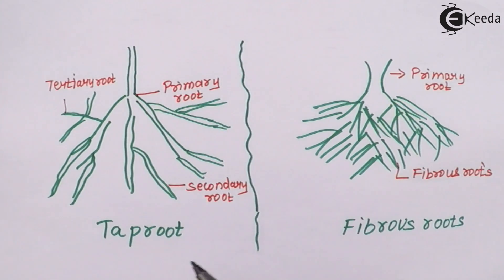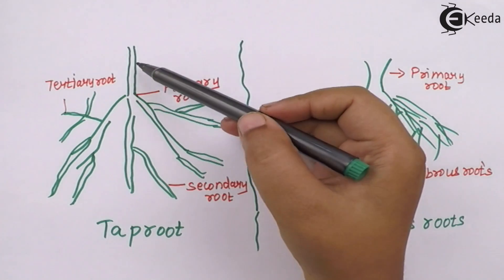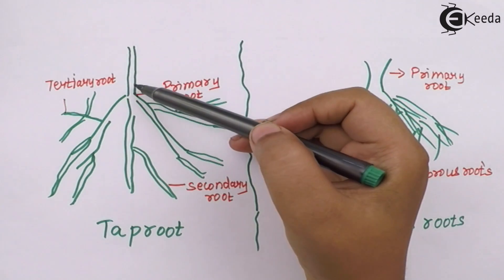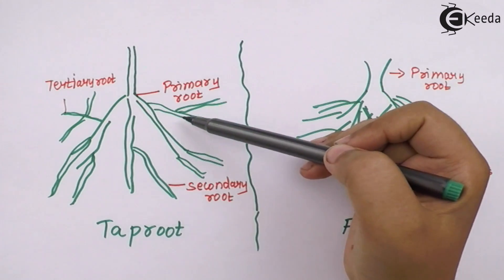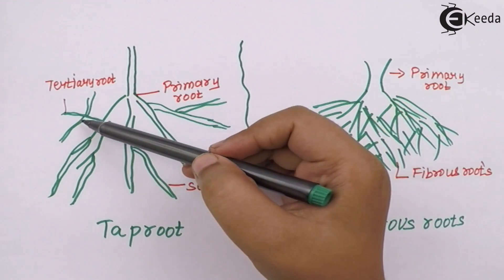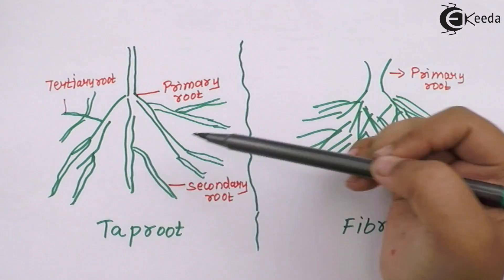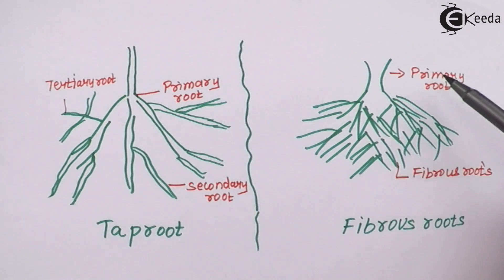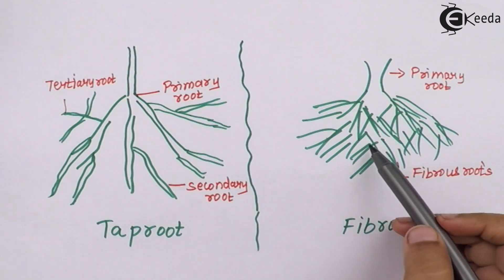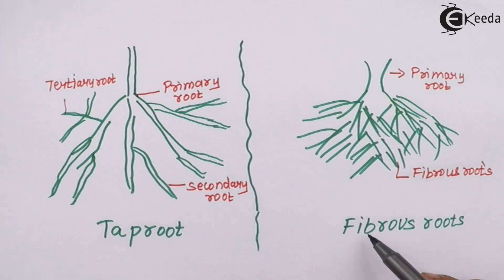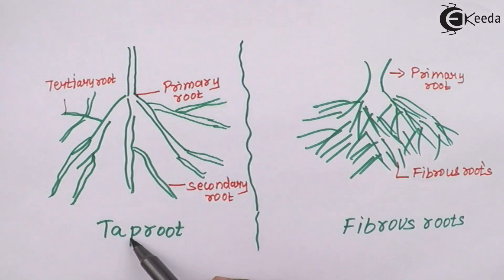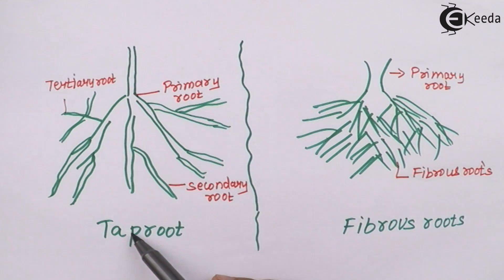This is the diagram of tap roots and these are adventitious roots. As you can see in tap roots, the primary root is the main root which is further branched into secondary and tertiary roots. These roots are countable, whereas in adventitious roots there is only one primary root and the remaining are fibrous roots. An example of fibrous roots would be rice, whereas tap roots are seen in mango or any other fruiting plant.